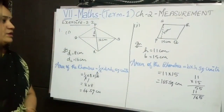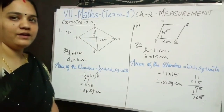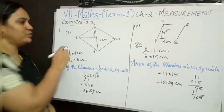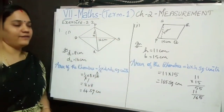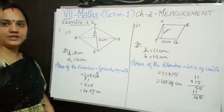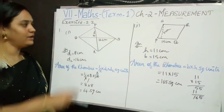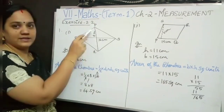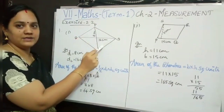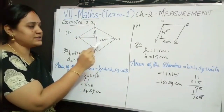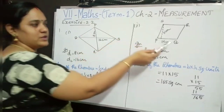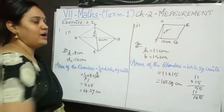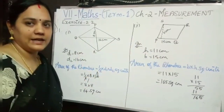So in this first problem, find the area of the given figure — that is option 1 and option 2. They have given two figures. I have drawn the figure here. So here this diagonal is given as 8 cm and this diagonal is given as 16 cm. Likewise for this problem, the height is given as 11 cm and base is given as 15 cm.